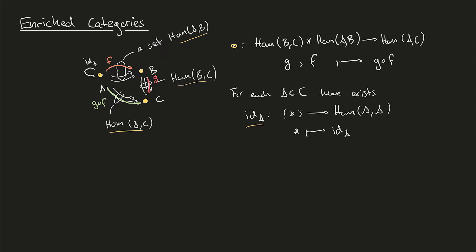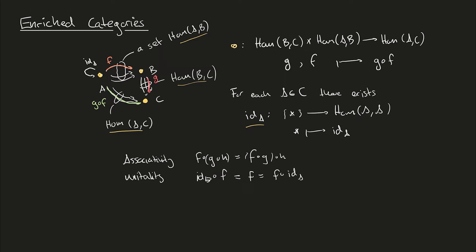We also require these data to satisfy certain axioms. In the case of a normal category we express these axioms in terms of elements of the hom sets. What we require is associativity of composition - that's saying that f after g after h bracketed in two different ways is equal - and unitality, which expresses that doing the identity at the codomain after an arrow is the same thing as that arrow, which is the same thing as doing the arrow after the identity at the domain.